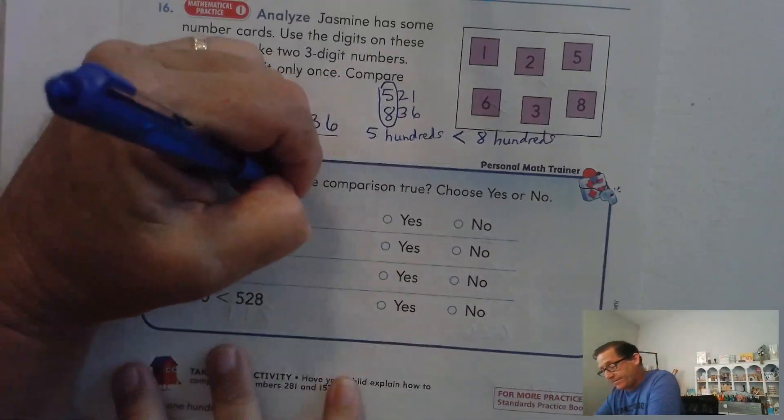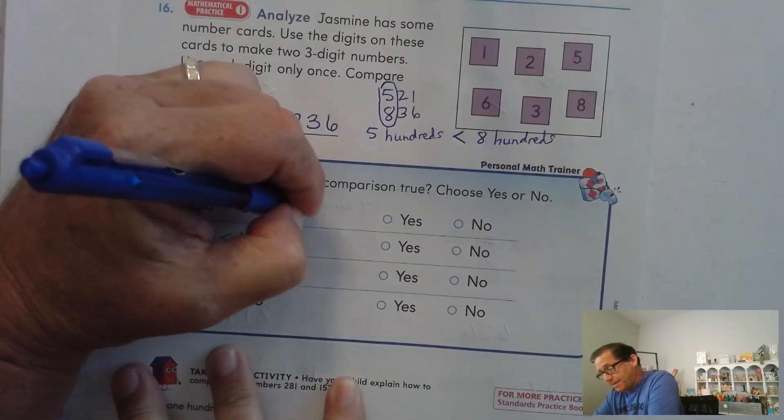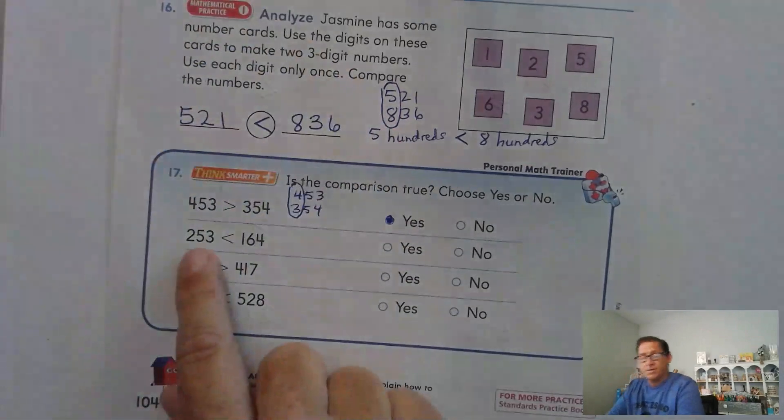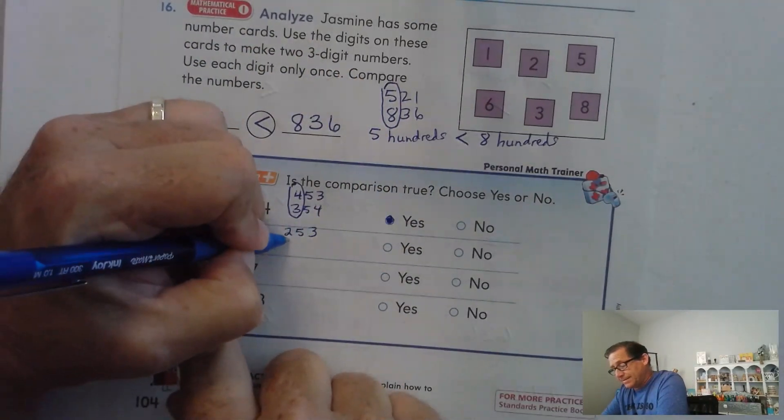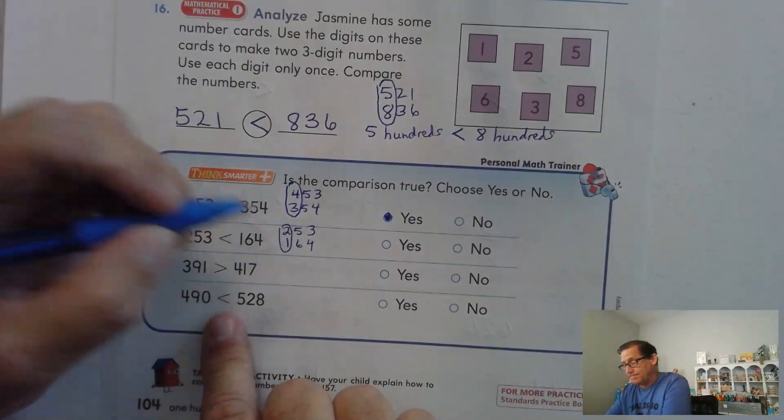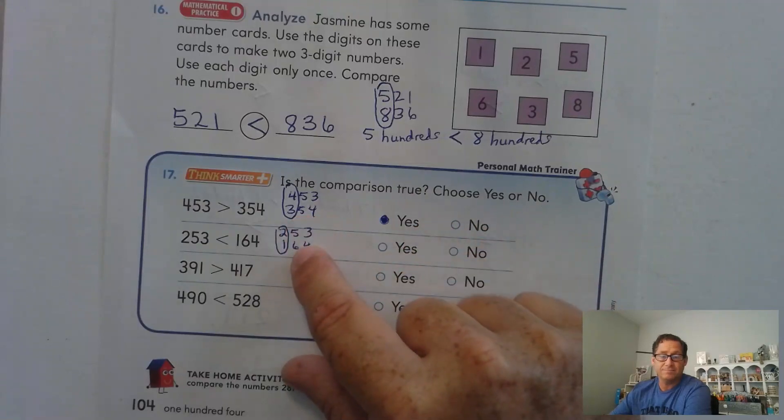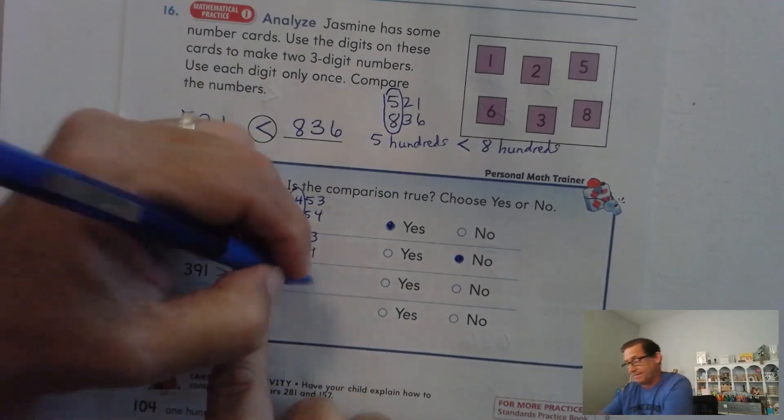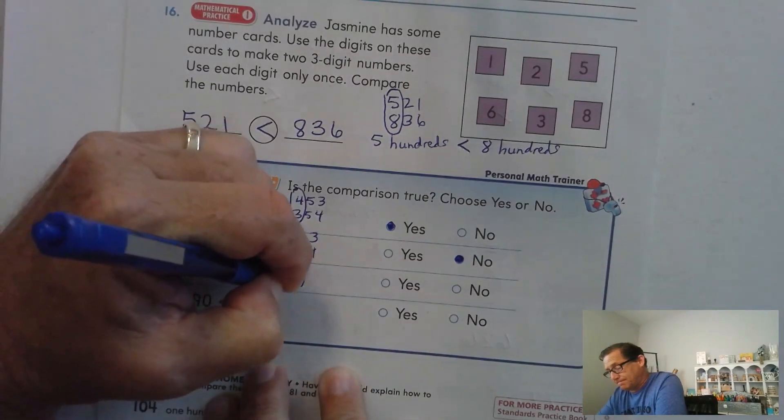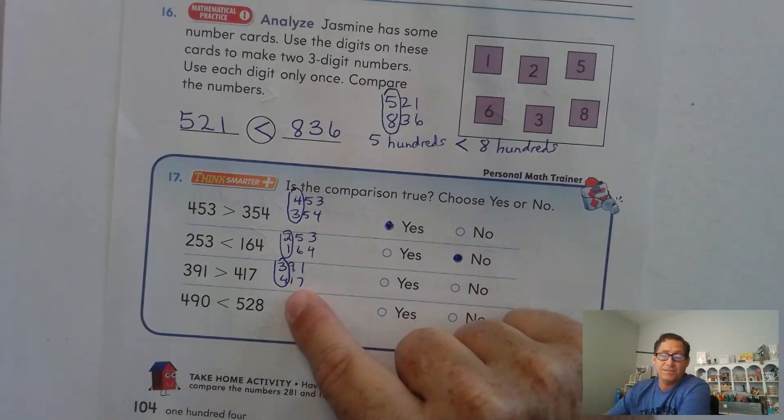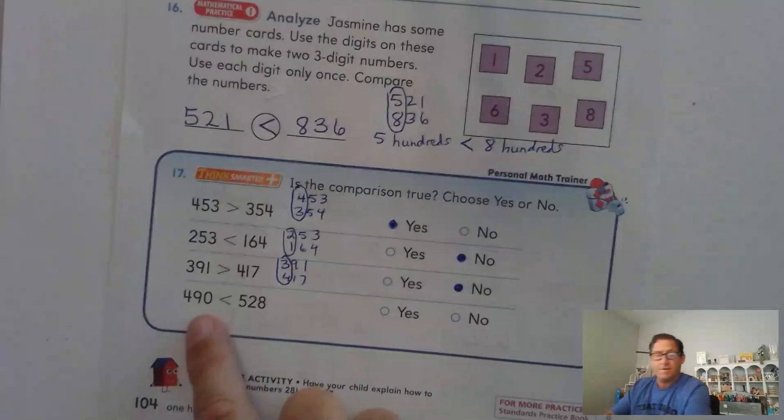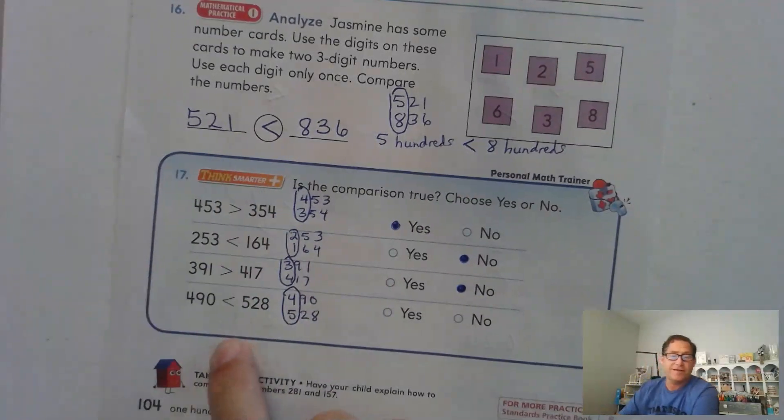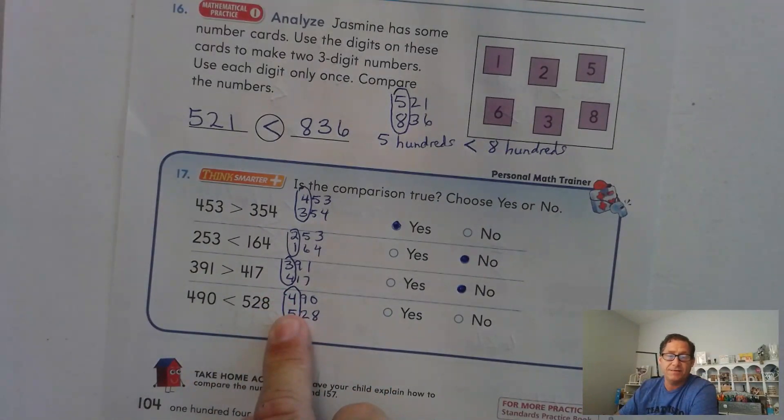All right. Is this comparison true? 453 is greater than 354. Is 4 greater than 3? Yes. 253 is less than 164. Is 2 less than 1? No. 391 is greater than 417. So is 3 hundreds greater than 4 hundreds? No. 490 is less than 528. Is 400 less than 500? Yes.